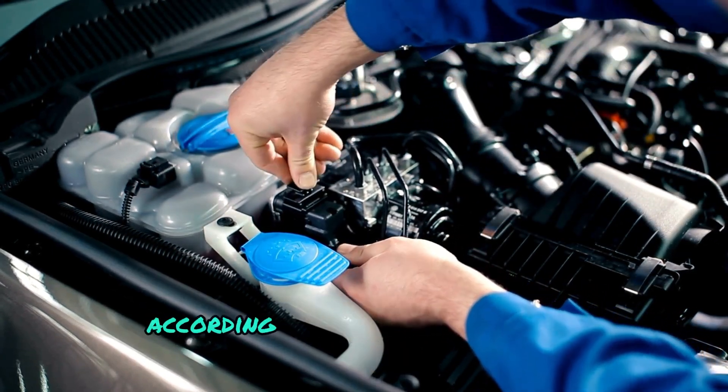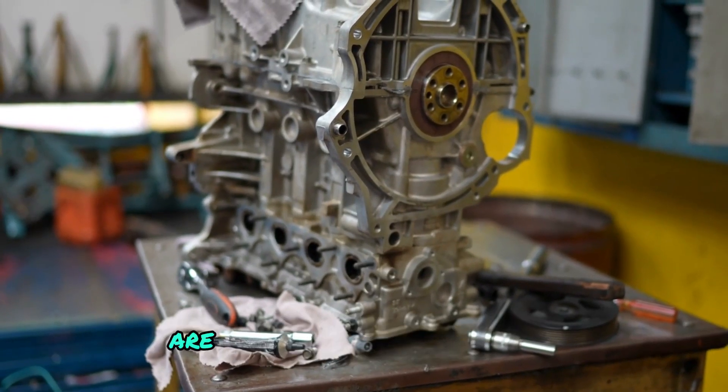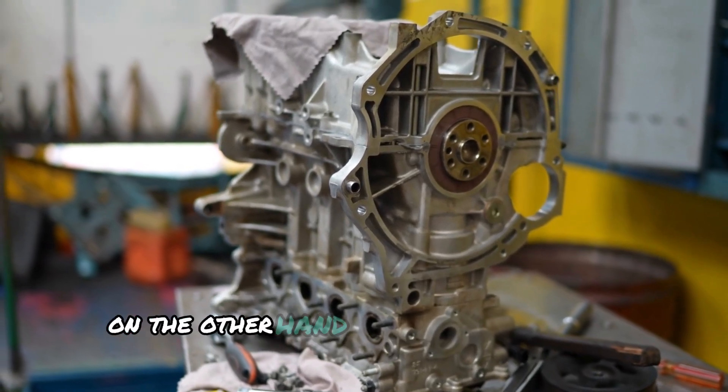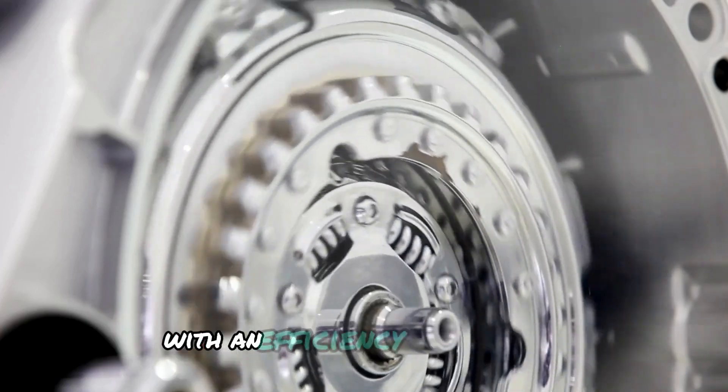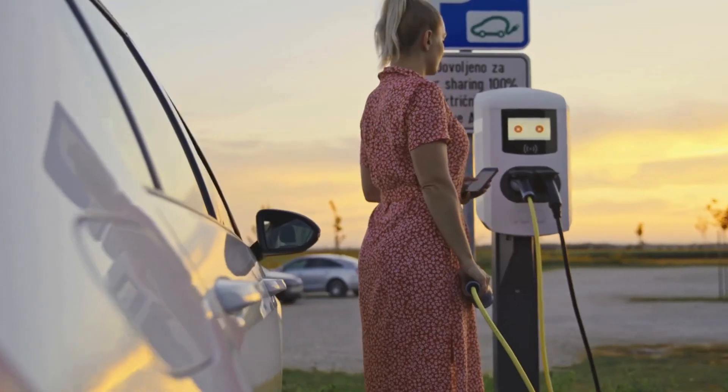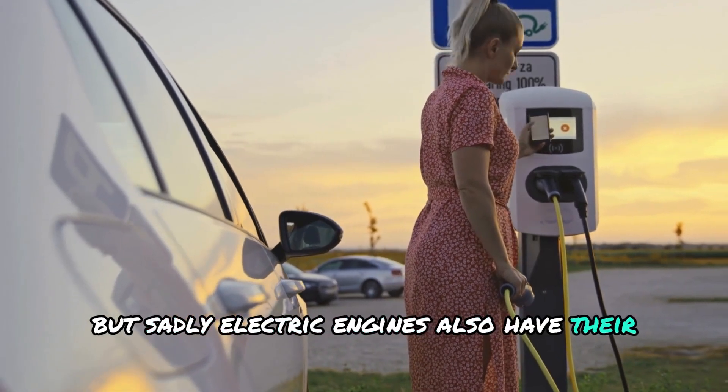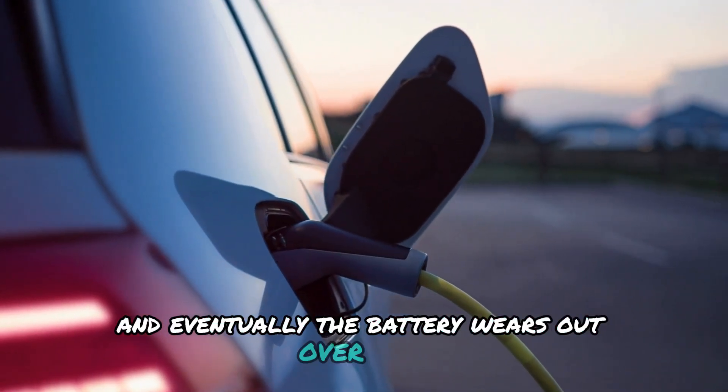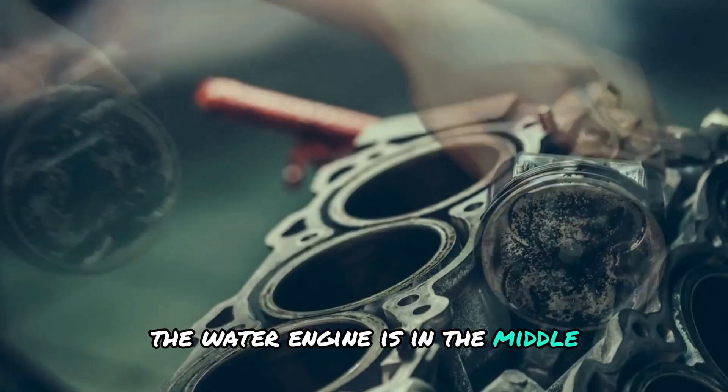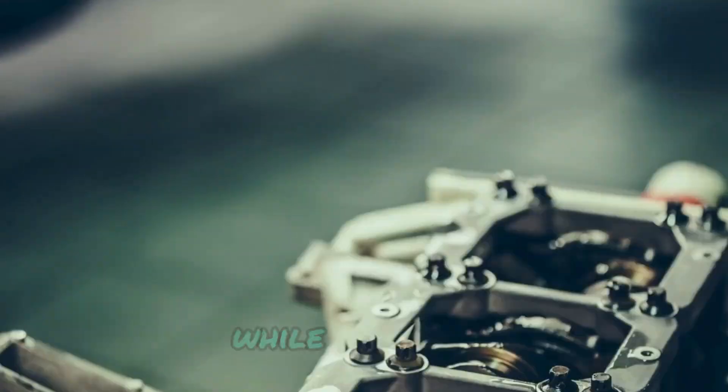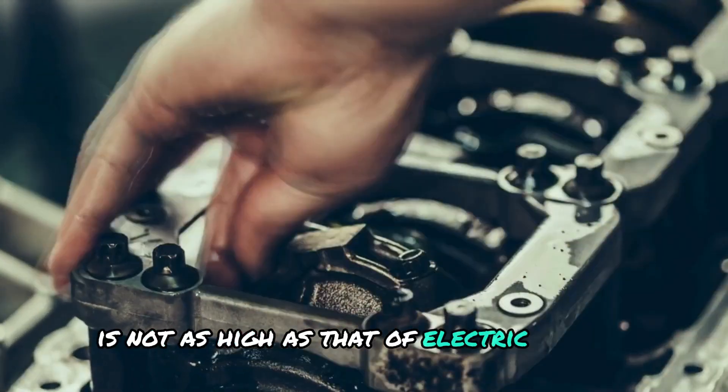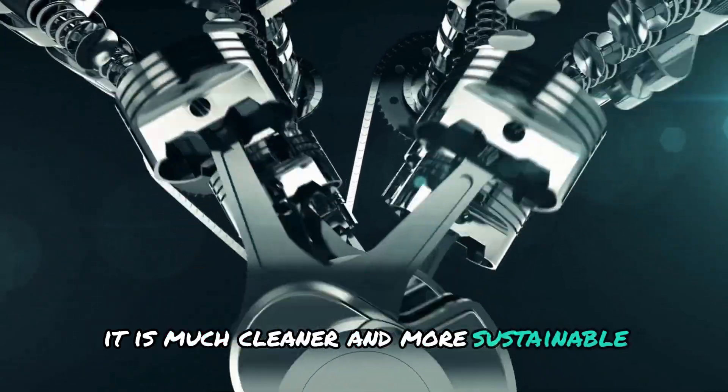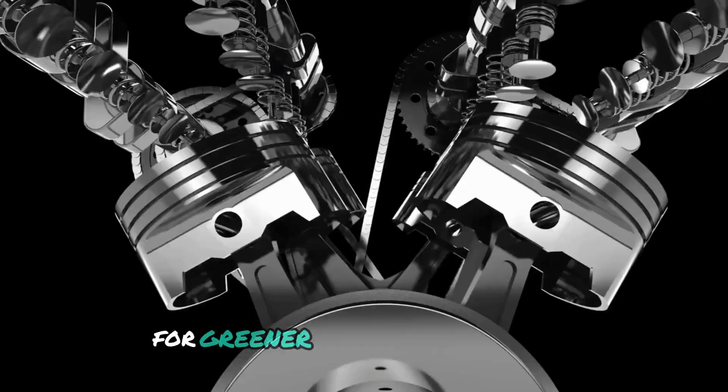According to experts, traditional combustion engines are about 20-30% efficient, wasting much energy in the form of heat. On the other hand, electric engines are much better, with an efficiency of 85-90%. But sadly, electric engines also have their downsides. For instance, they are slow to charge, and eventually, the battery wears out over time. The water engine is in the middle, with around 60% efficiency. While its efficiency is not as high as that of electric engines, it has another huge benefit. It is much cleaner and more sustainable. This makes it a promising alternative for greener energy in the future.